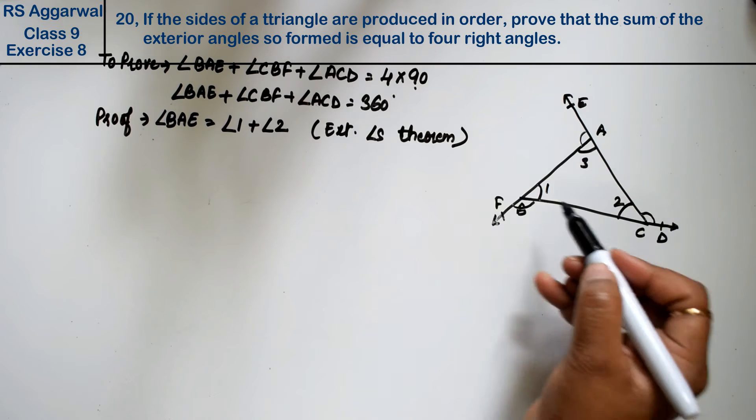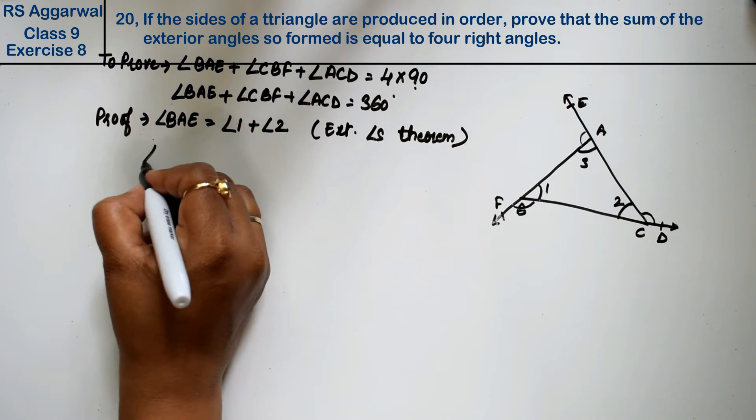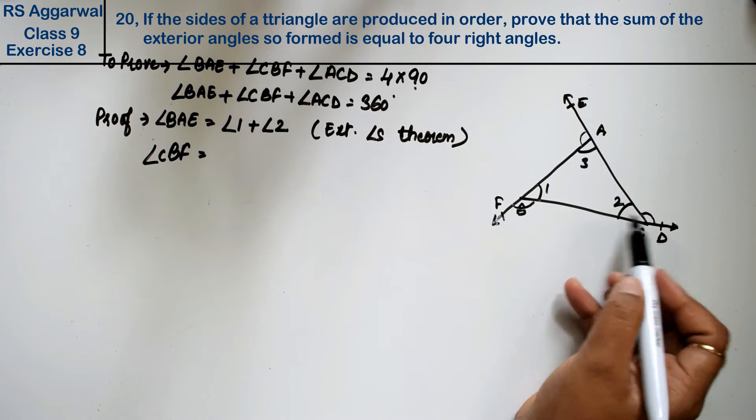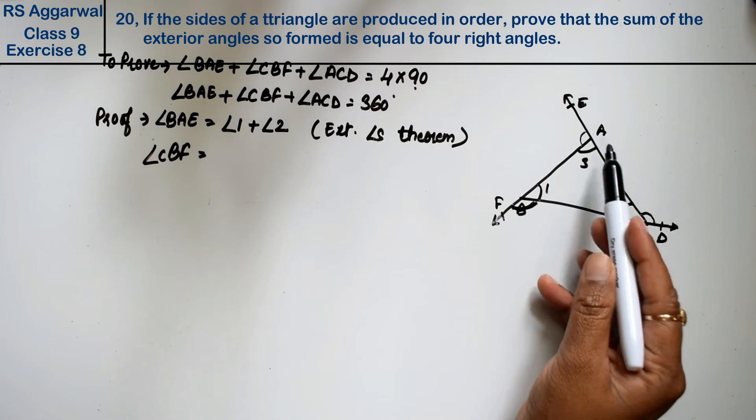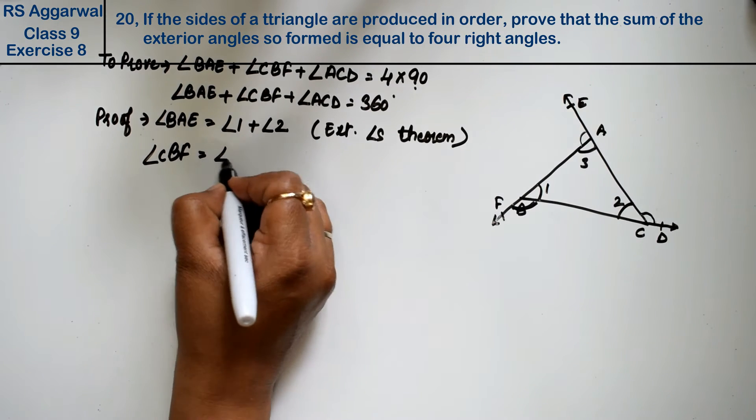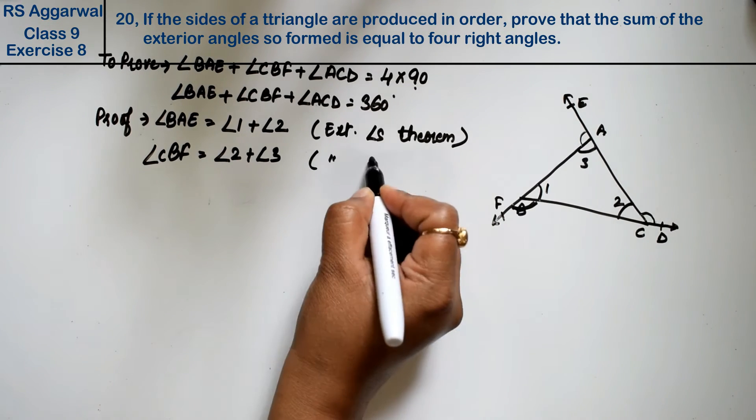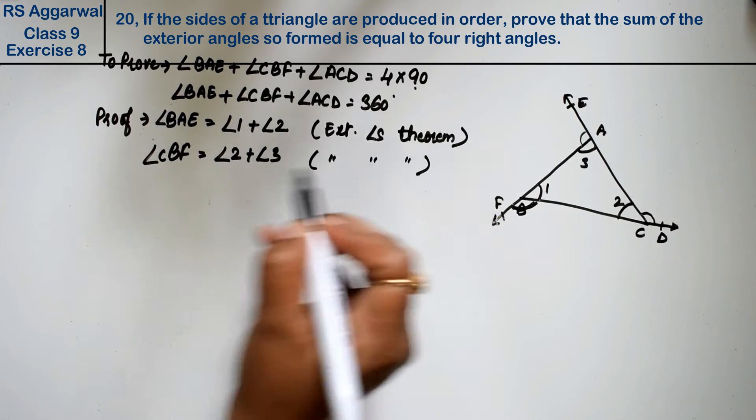Similarly, angle CBF. This angle will be angle 3 and angle 2. So angle CBF equals angle 2 plus angle 3. Same reason, exterior angle theorem.